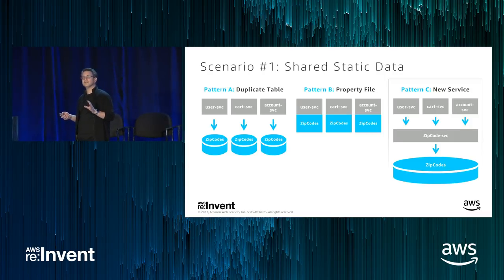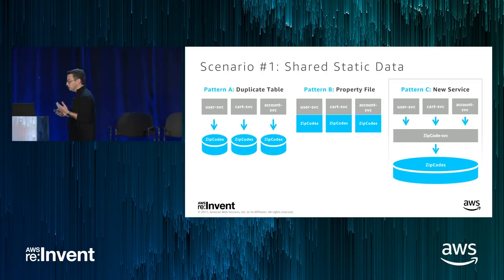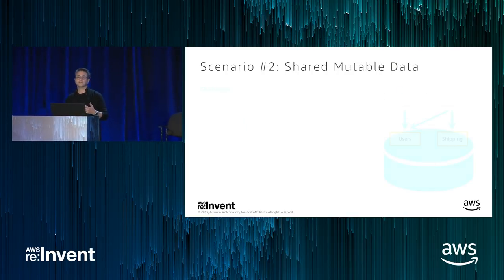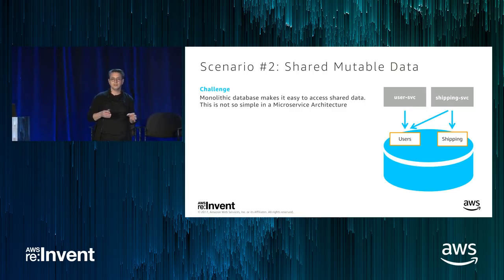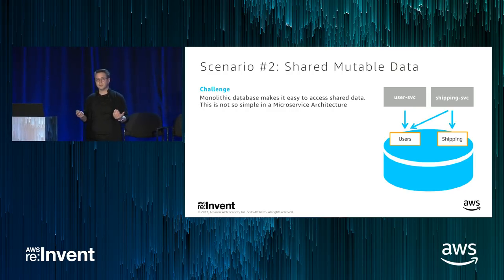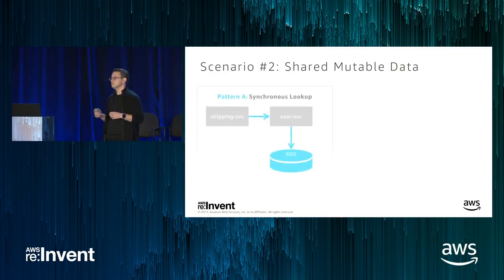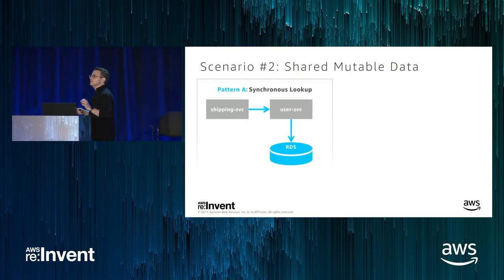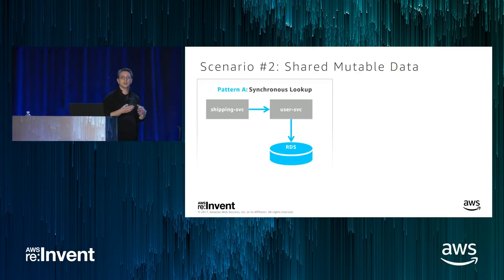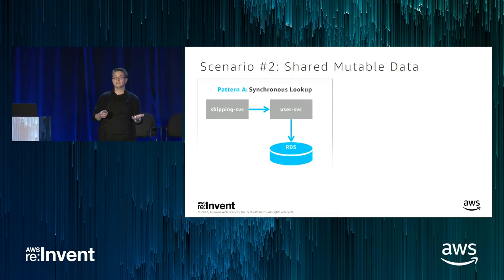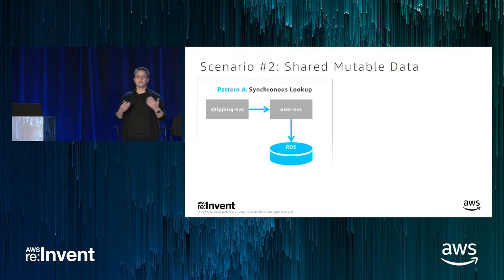Now let's talk about frequently changing data — in the context of a shipping service that needs access to a user's address. In a monolithic world, the shipping service reaches into the database, gets the user's table, and retrieves the address. When we tease apart our database, the first approach is the synchronous lookup: each service that needs another service's data makes a synchronous call. The shipping service calls the user service, which queries its database and returns the information.